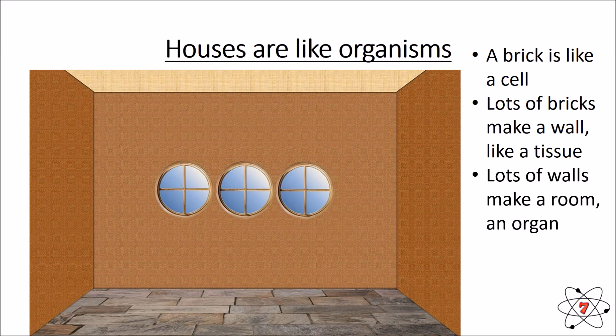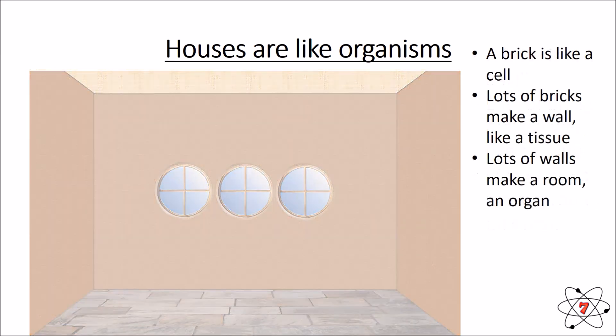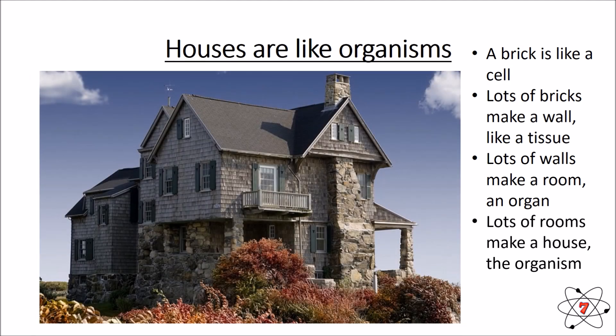If we join lots of walls together, it's no longer just a wall — it becomes a room, something with a specific job. You don't cook in your bedroom because each room is specialized to do a job. So the rooms are like organs, built by specific tissues. Join all the rooms together and you make a house — our house is like our organism.